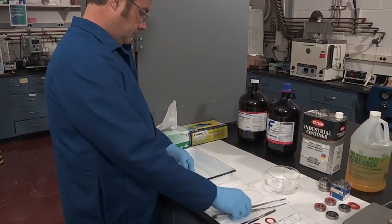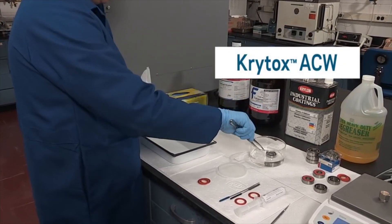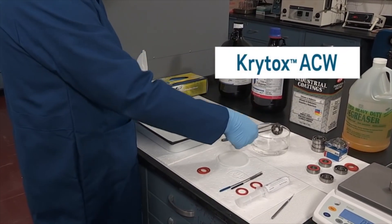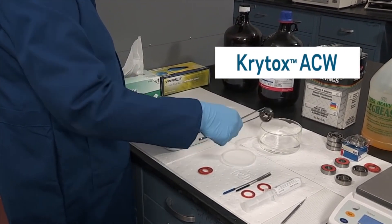To prevent corrosion when stored, immediately lubricate the bearing or dip in Krytox ACW. Using Krytox ACW will help prevent corrosion if the bearing is to be stored for an extended period before lubrication.